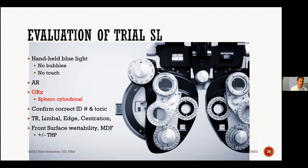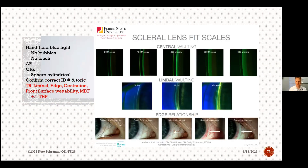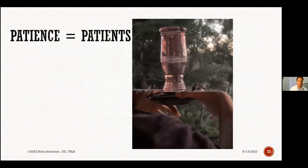Evaluation of scleral lenses: I do a sphero-cylinder over-refraction. Always confirm the lens ID from your fitting set — I've ordered the wrong lens before because I didn't check the ID number. Make it part of the exam and write it into the record. Look at limbal vaulting and check for any front-surface fog. Front-surface fog makes me want to order a polyethylene glycol coating for the lens.